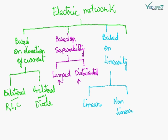Based on linearity, there are two types of network: linear and nonlinear. If the V-I characteristic is linear, it is a linear network. Whereas for nonlinear network, the characteristic can be like diode - it is a nonlinear device.